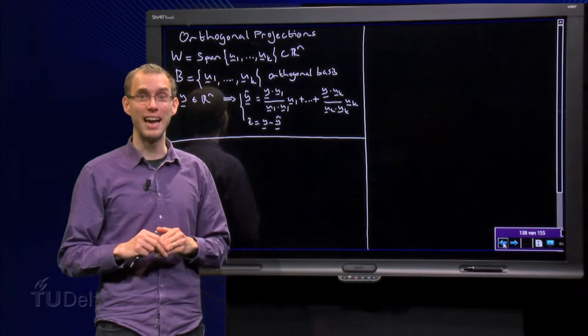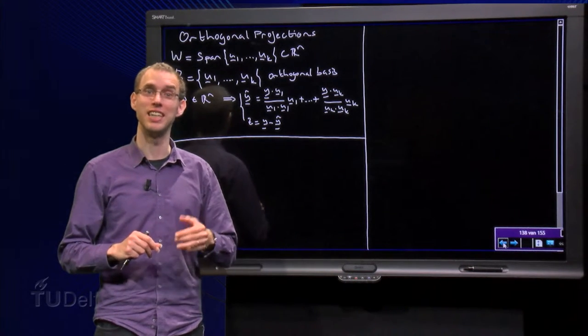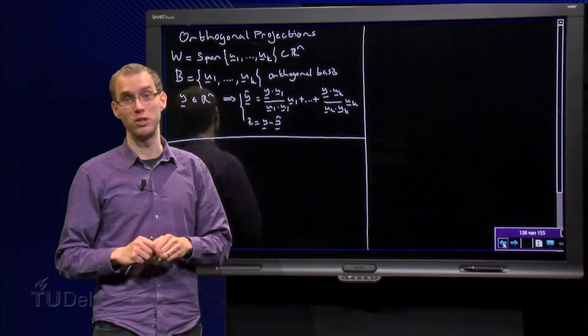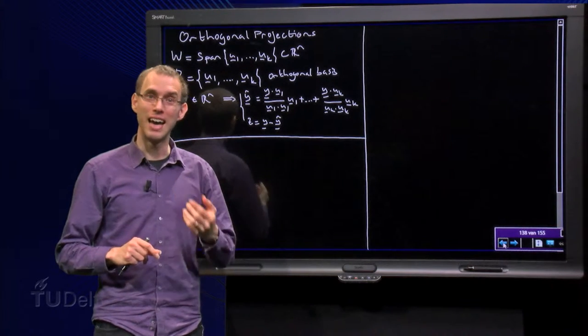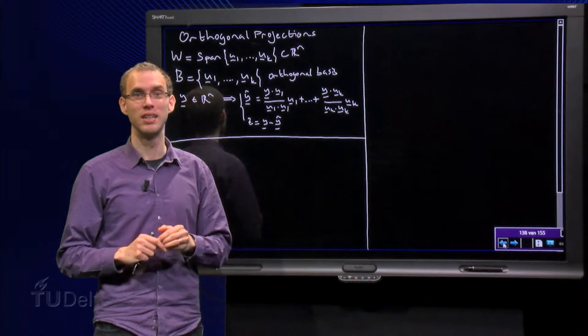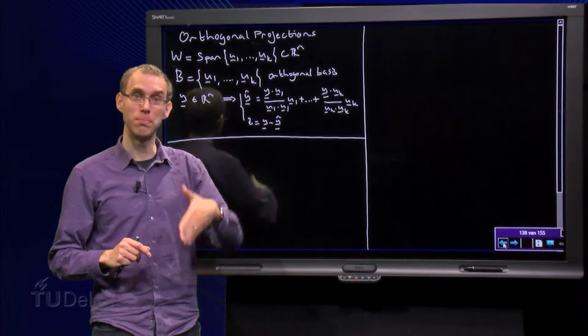Both y-hat and z have a nice geometrical interpretation as well. Call the point where y is pointing to the point p. y-hat points to the point in w which is closest to p, say p', and z is the vector connecting p and p'.